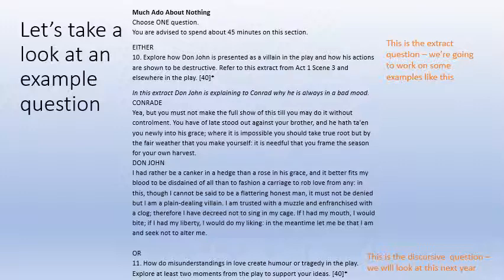Conrad says: 'Yea, but you must not make the full show of this till you may do it without controlment. You have of late stood out against your brother, and he hath taken you newly into his grace, where it is impossible you should take true root but by the fair weather that you make yourself. It is needful that you frame the season for your own harvest.' Don John replies: 'I had rather be a canker in a hedge than a rose in his grace... I am a plain-dealing villain. I am trusted with a muzzle and enfranchised with a clog; therefore I have decreed not to sing in my cage. If I had my mouth, I would bite; if I had my liberty, I would do my liking. In the meantime, let me be that I am, and seek not to alter me.'